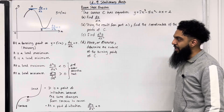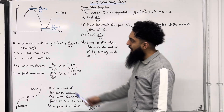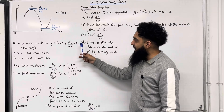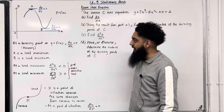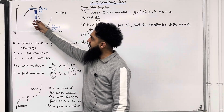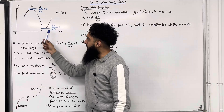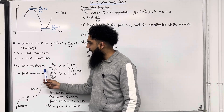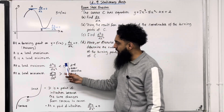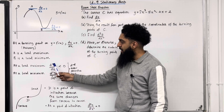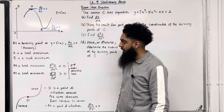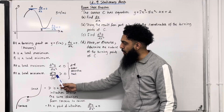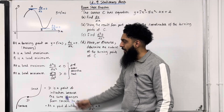The reason why they're called stationary points is because dy/dx is equal to 0 at stationary points. Let's have a look at the formal definition. At a turning point on y = f(x), dy/dx is equal to 0. A is called a local maximum. B is called a local minimum. At a local maximum, the second derivative d²y/dx² is less than 0. At a local minimum, the second derivative d²y/dx² is greater than 0.